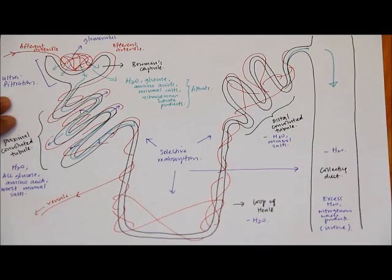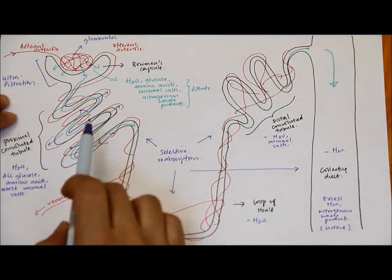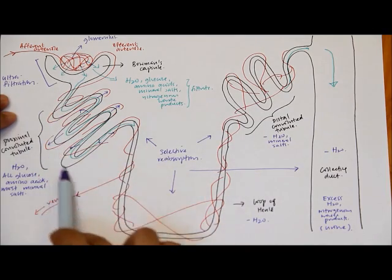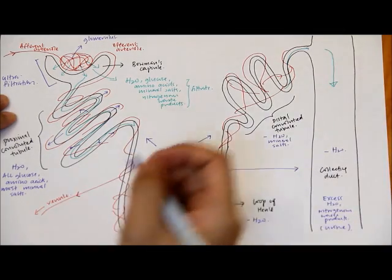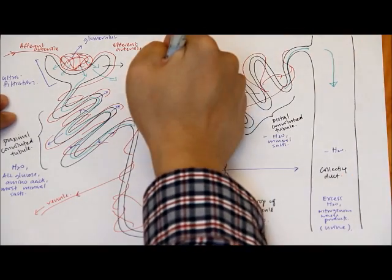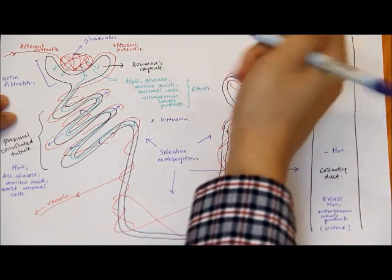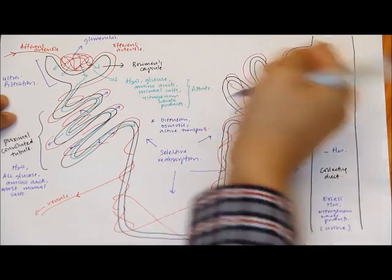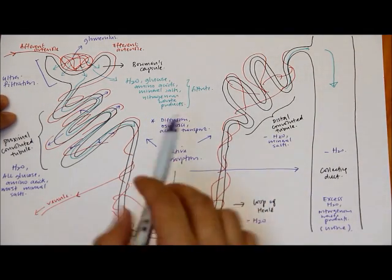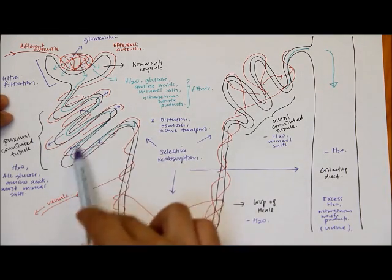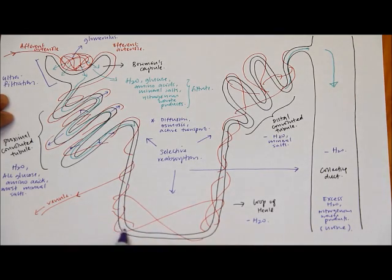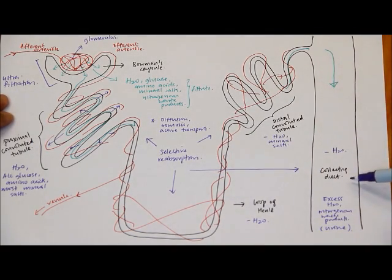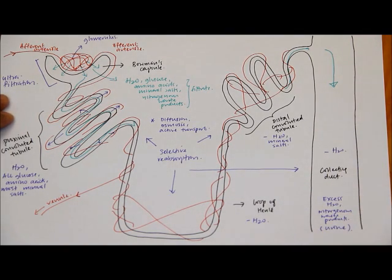The selective reabsorption occurring throughout the nephron is driven by the same processes of substance movement: diffusion, osmosis, and active transport, depending on what substance is being reabsorbed. Because the process is selective, the blood reabsorbs only what it needs. Excess water and nitrogenous waste products pass on to the collecting duct, then to the renal pelvis, and finally to the bladder to be removed from the body.